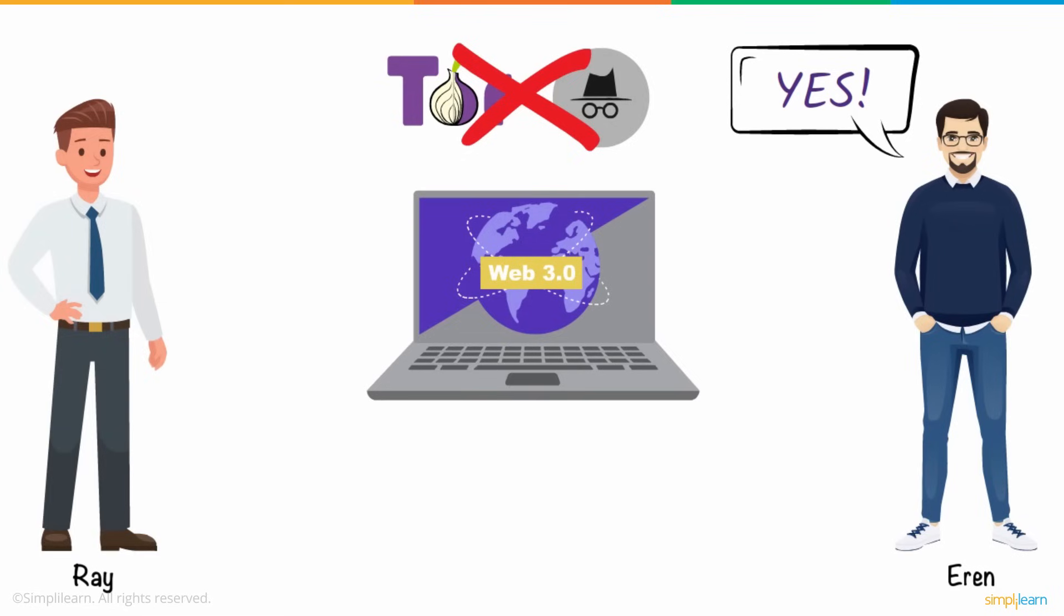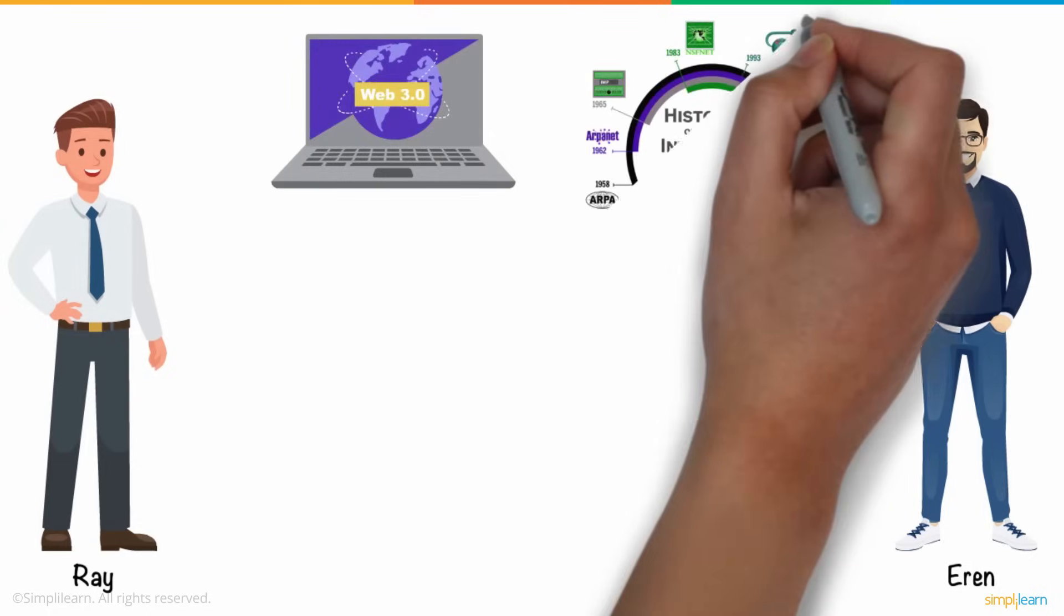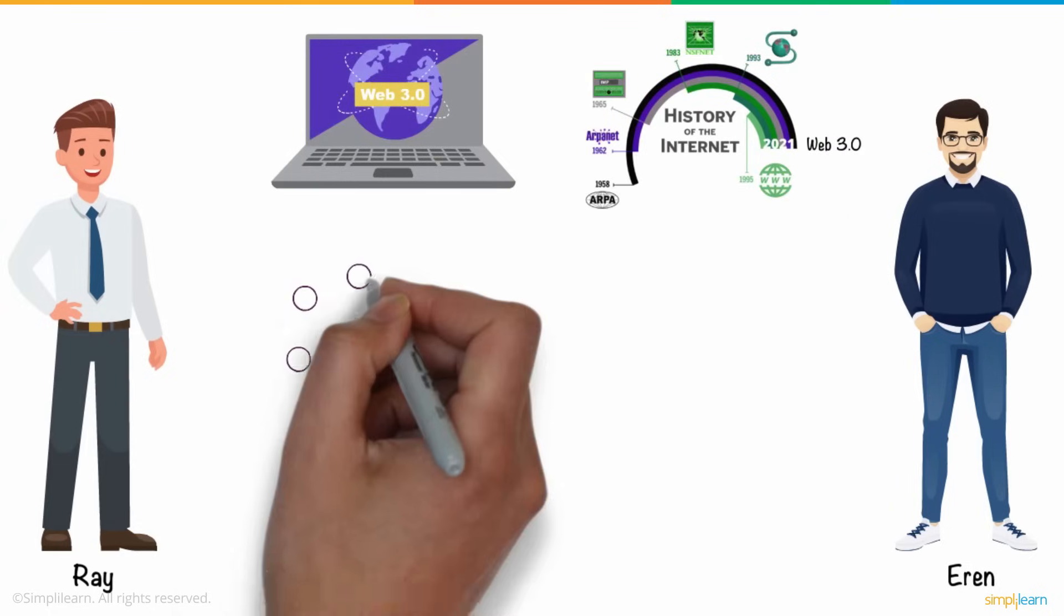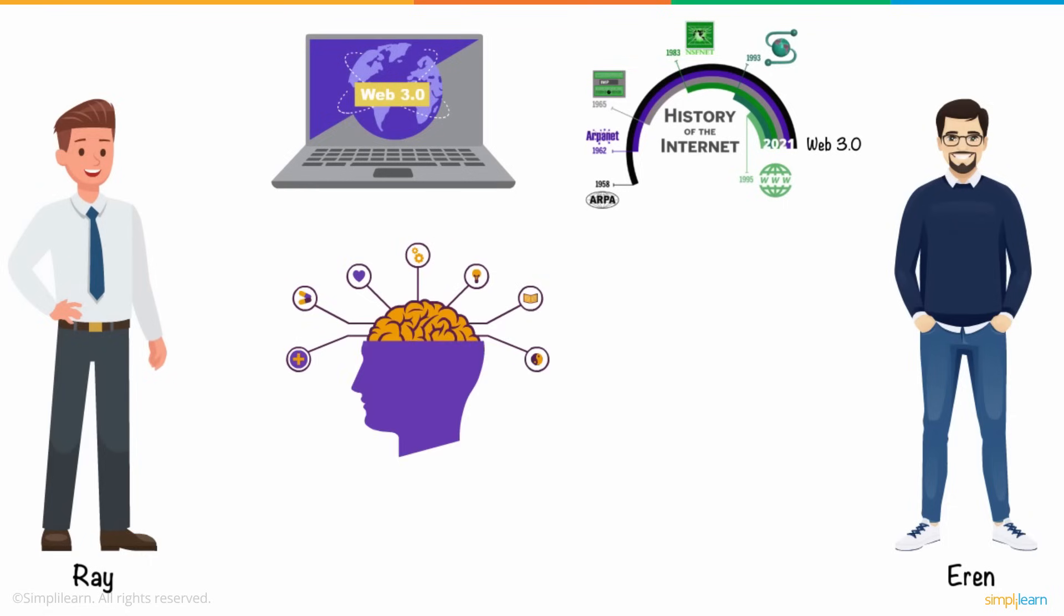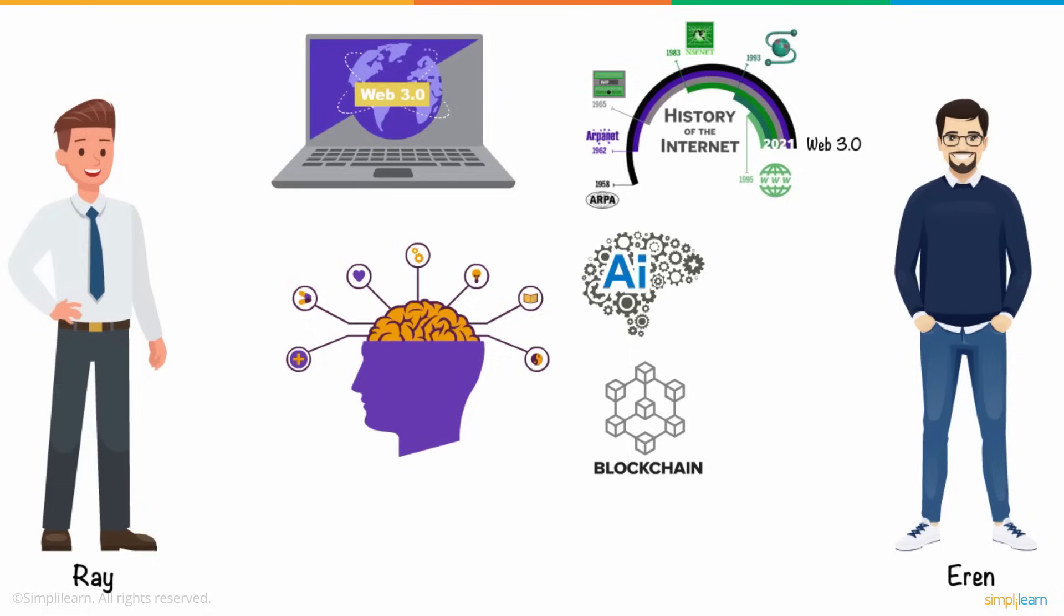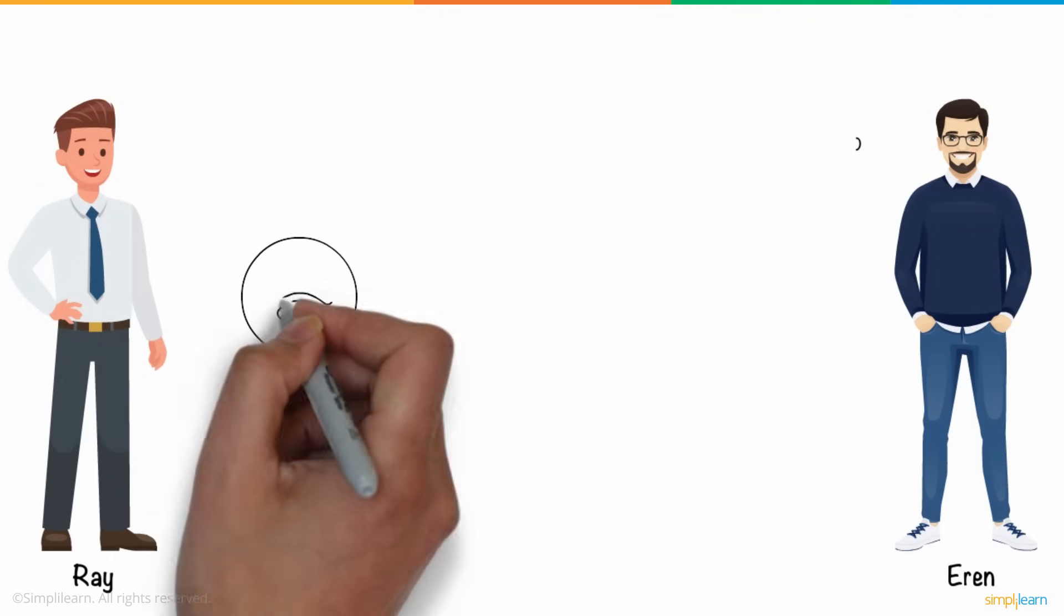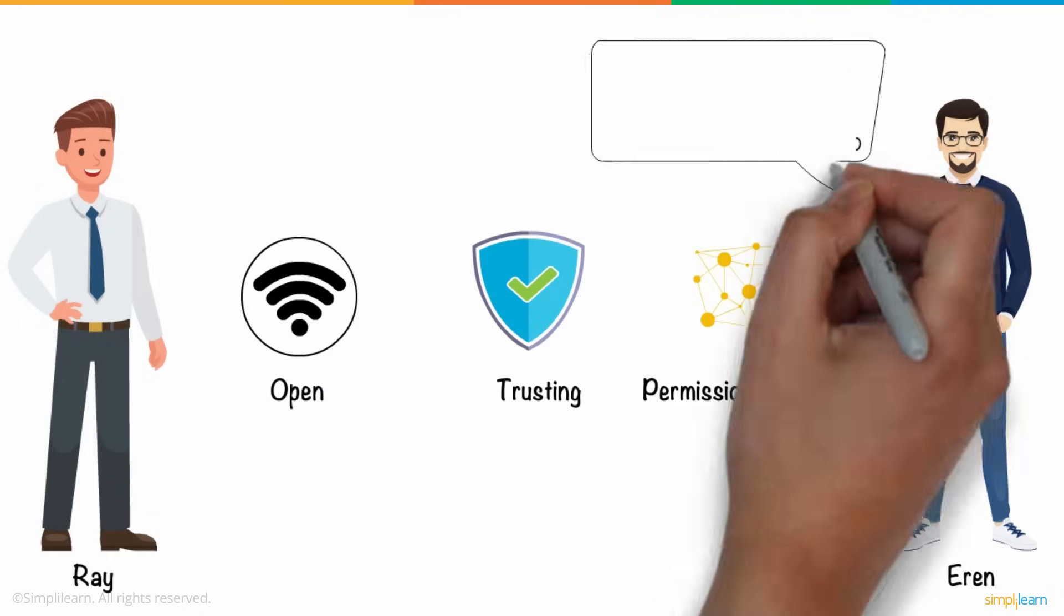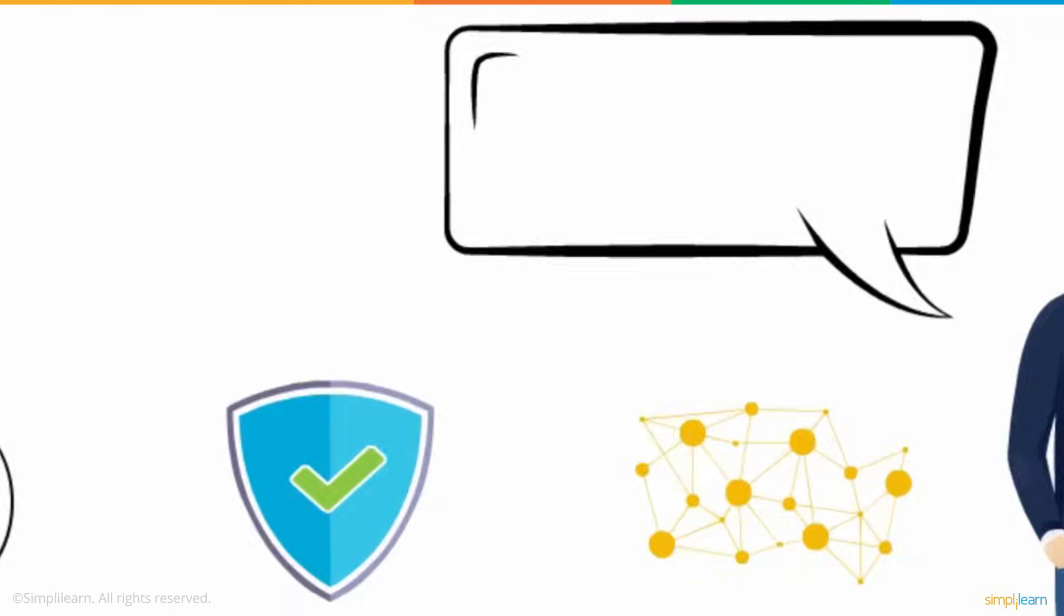Ray was curious about it and asked, What is Web 3.0? Aaron explained that Web 3.0 is the next step in the evolution of the internet, allowing it to process data with near-human intelligence through the use of artificial intelligence and blockchain technologies that run innovative programs to help users by providing them with their relevant choices. It's a significant step toward open, trusting, and permissionless networks.